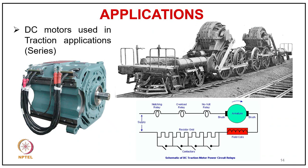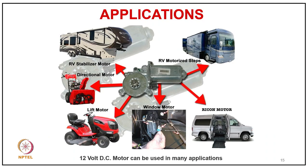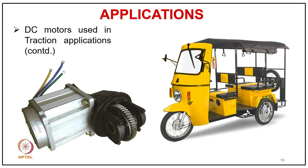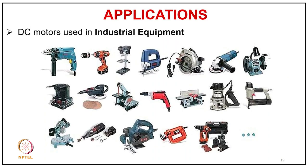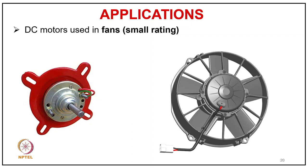DC motors are used in traction applications such as DC series motors. Most older trains, and many even today, are operated by DC motors because they offer very high starting torque and constant power characteristics required for traction. A 12-volt DC motor can be used in many appliances like RV stabilizers, direction motors, RV motorized steps, window motors, lift motors, and rear cone motors. DC motors are also used in high-speed tools with gears, industrial equipment, small-rating fans, and computers with permanent excitation — permanent brush DC motors are used in most computers including laptops and desktops.